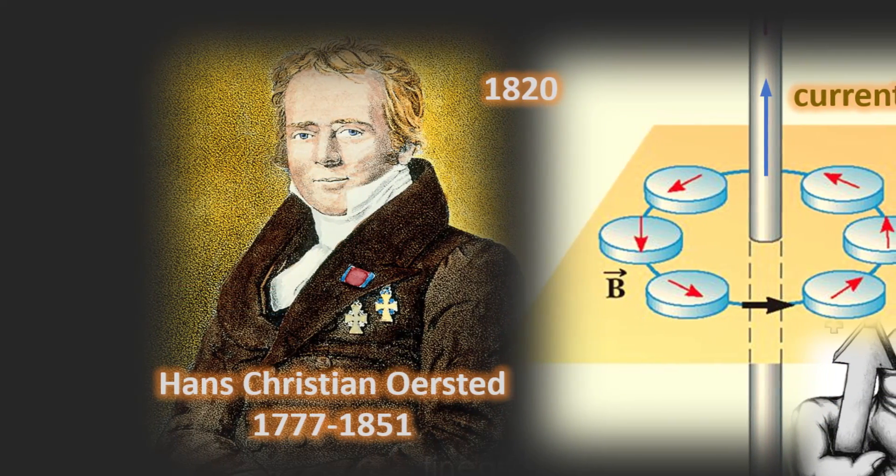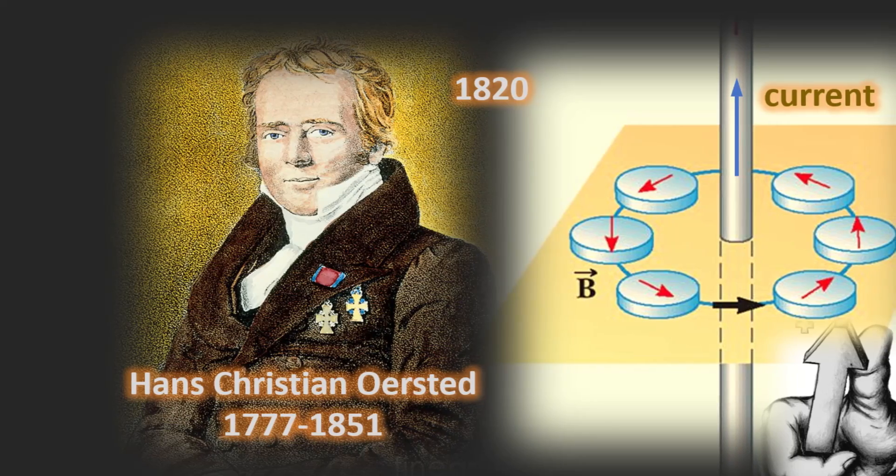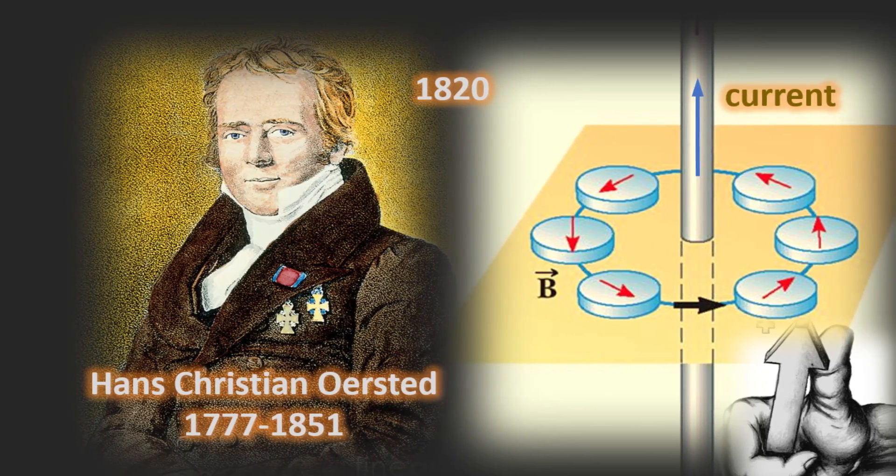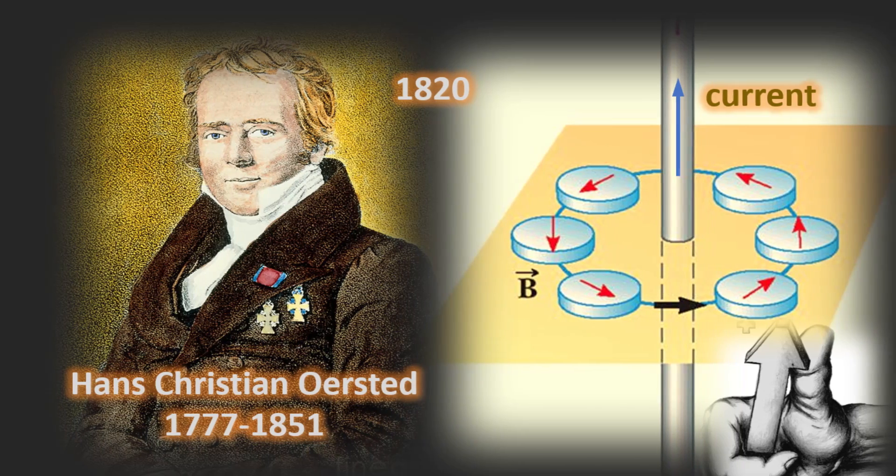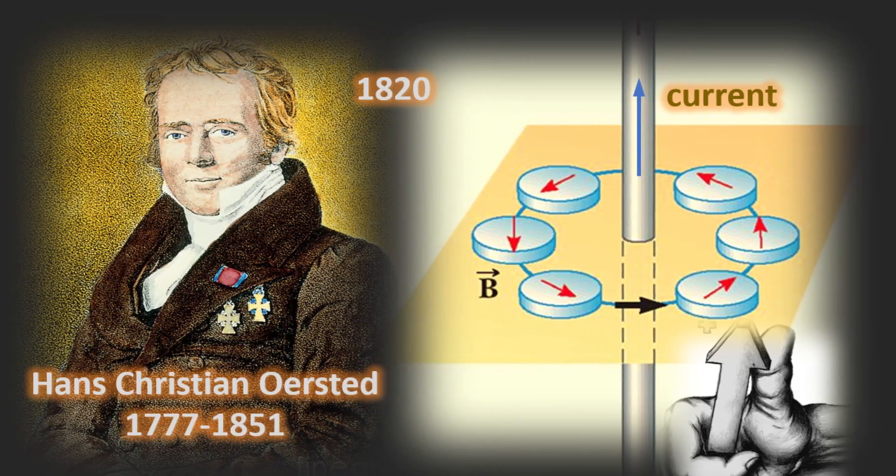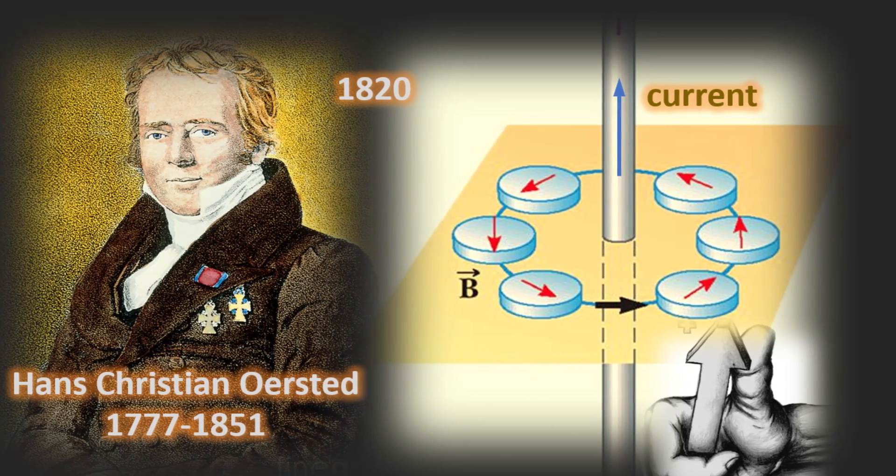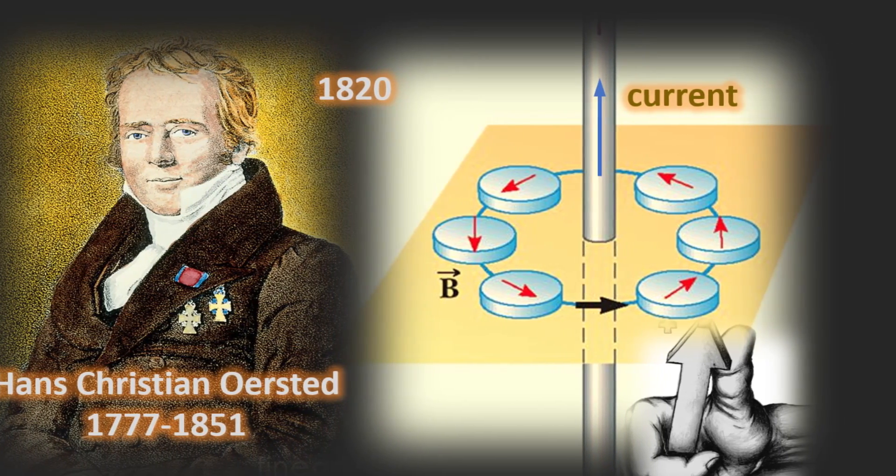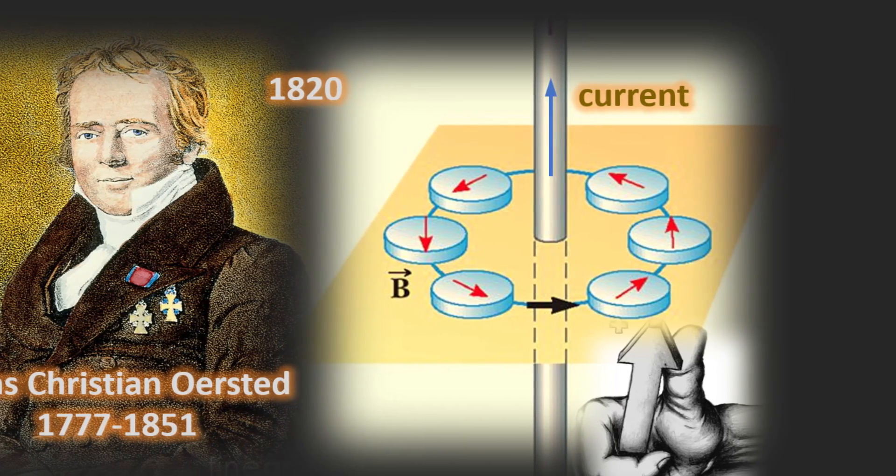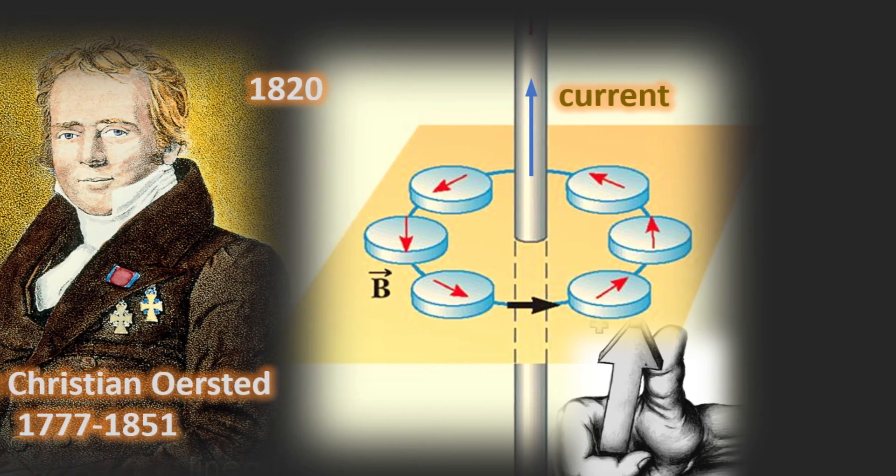In 1820, Danish physicist and chemist Hans Christian Ørsted discovered that a compass needle was deflected from magnetic north by a nearby electric current. The compass needle points in a circular manner in a direction described by the so-called right thumb rule. Ørsted's experiment confirmed a direct relationship between electricity and magnetism—electromagnetism or electrodynamics was born.